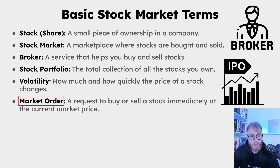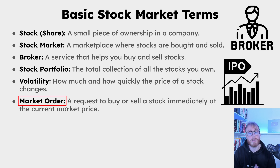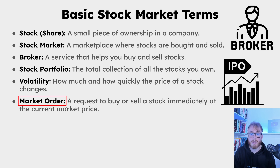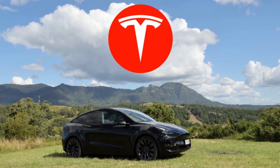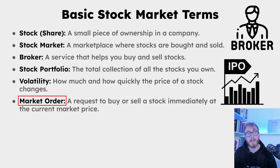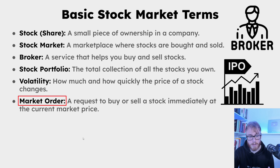A market order is a simple request to buy or sell a stock immediately at the current market price. So if Tesla is trading at $200 and you place a buy market order, you will simply buy Tesla at $200. It's a pretty simple term.